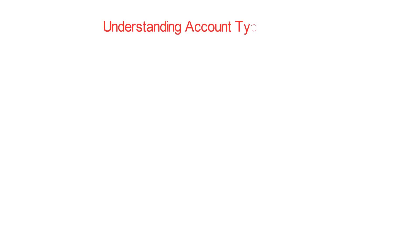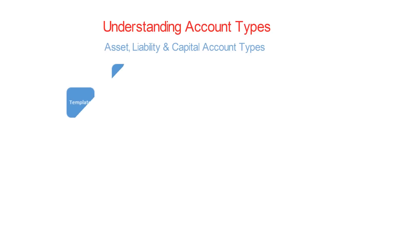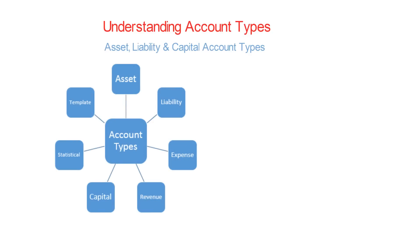Understanding Account Types: Asset, Liability, and Capital Accounts. When defining general ledger codes, you need to enter the type of account the code represents. There are a number of account types, such as Asset, Liability, Expense, Revenue, Capital, Statistical, and Template. Let's focus on the Asset, Liability, and Capital accounts.